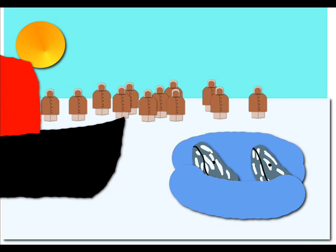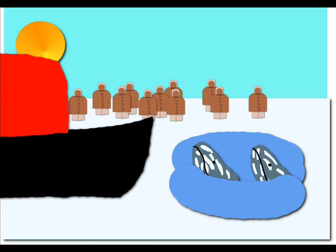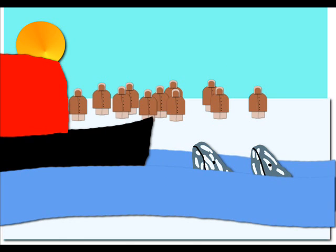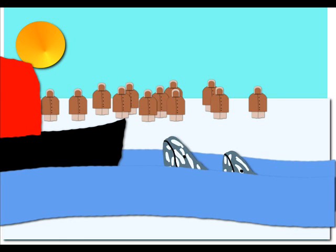Eventually, a Soviet icebreaker, flying United States and Soviet flags from her stern, created a channel through the ice out to the open sea.